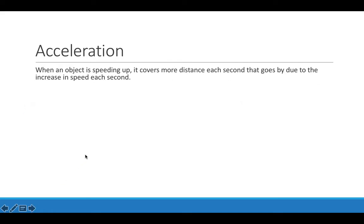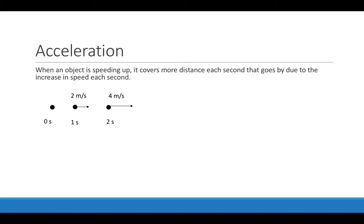When an object speeds up, it will always cover more distance every second because the speed is increasing. Here I have an object that starts from rest, and after one second it's traveling 2 meters per second, after two seconds 4 meters per second, three seconds 6, and then 8. We notice that over time, the distance the object covers between time intervals is increasing, and that will always be the case if an object is speeding up.